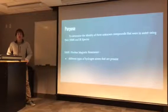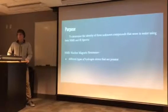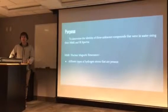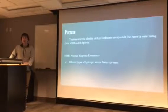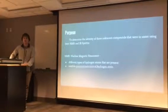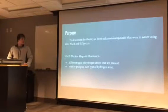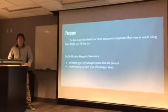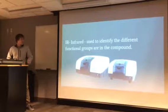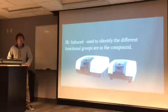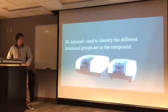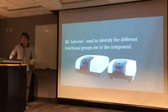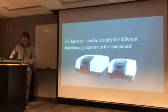The NMR — nuclear magnetic resonance — helps determine what types of hydrogen atoms are present in the molecule and the relative grouping of each type of hydrogen atom. The IR, or infrared, is used to identify the different types of functional groups that are present in the compound.